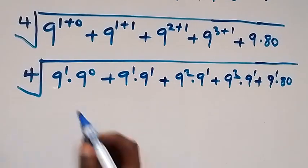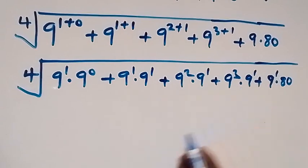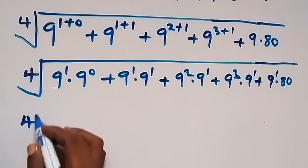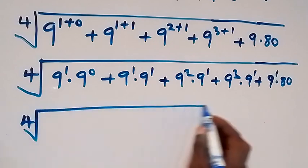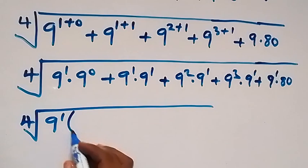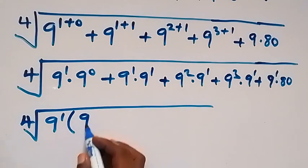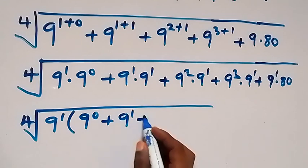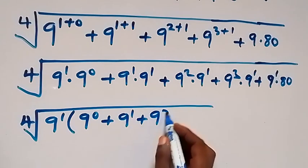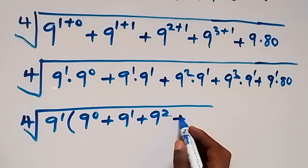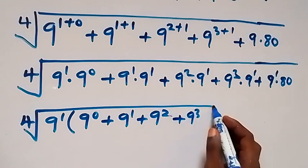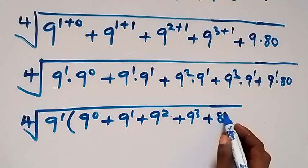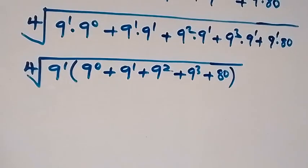From here we have 9 raised to power 1 common to all terms, so when we factor it out we have the fourth root of 9 raised to power 1 outside the bracket. Inside the bracket we are left with 9 raised to power 0, plus 9 raised to power 1, plus 9 raised to power 2, plus 9 raised to power 3, plus 80.